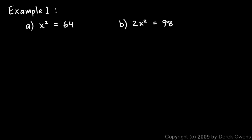Here's the first example — actually two examples. Part A: x squared equals 64. We just take the square root of each side and get x equals plus or minus 8. Don't forget the plus or minus — it's common to forget that. Just saying x equals 8 isn't quite correct; there really are two solutions, and you should name both.